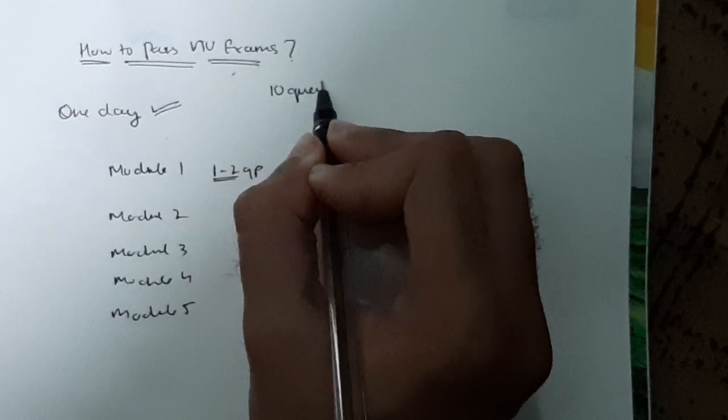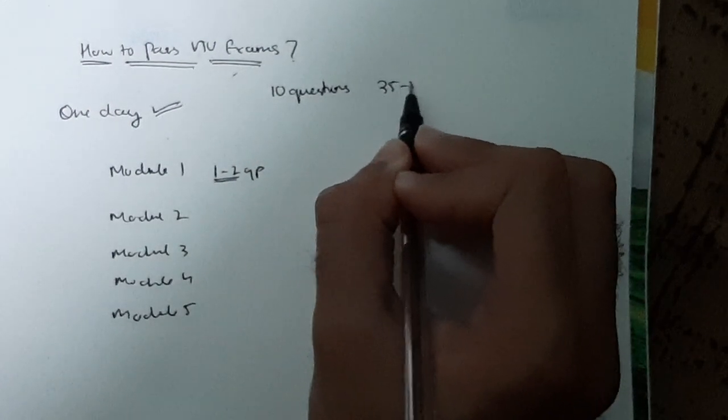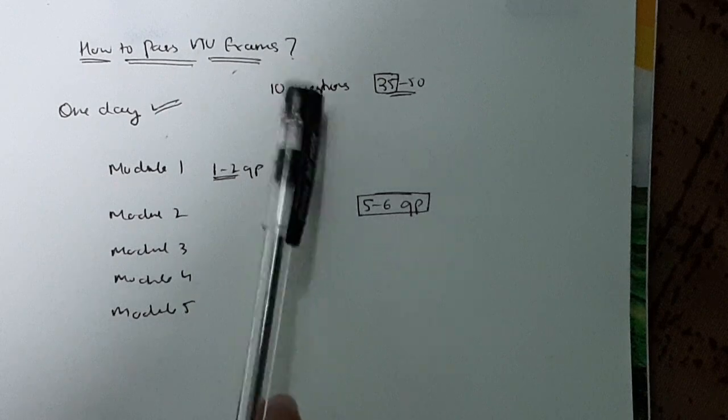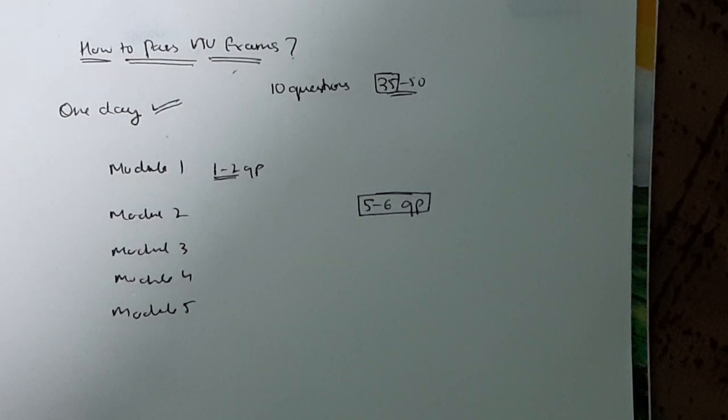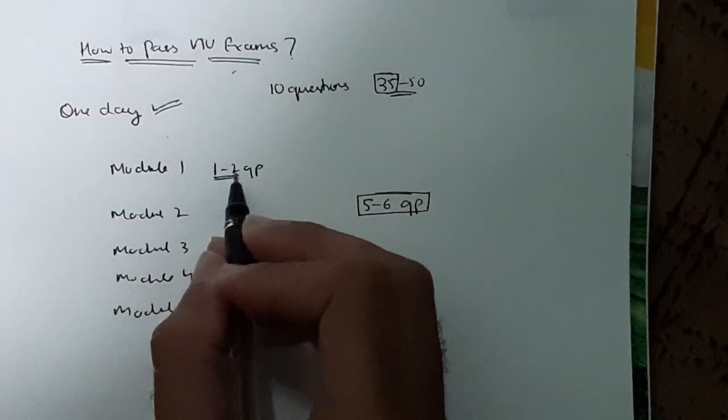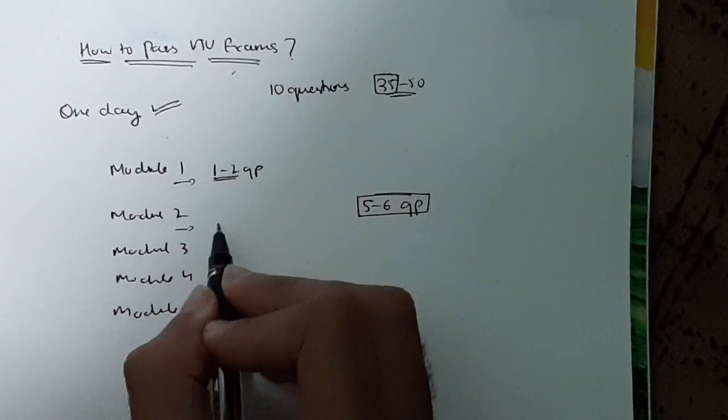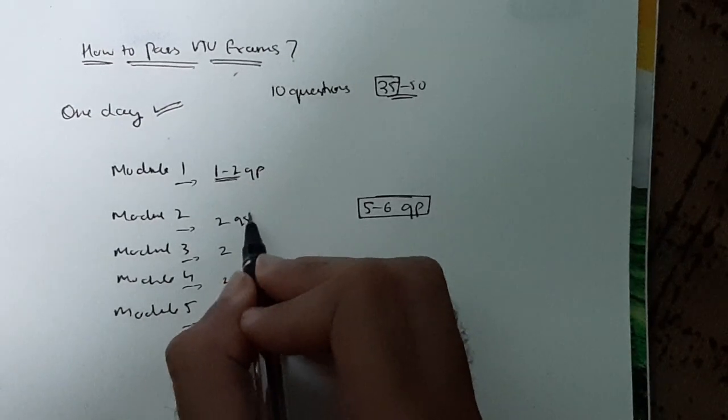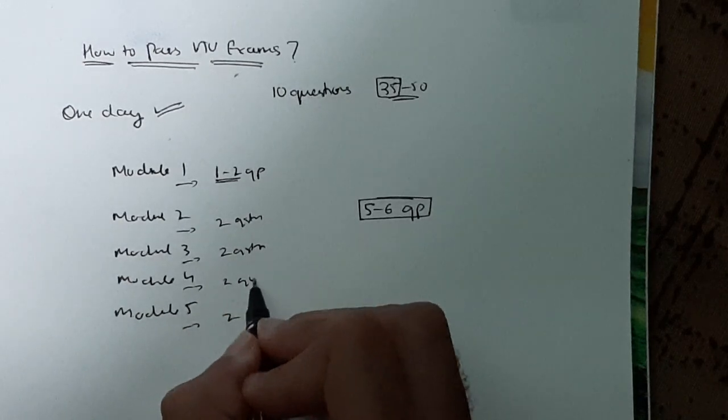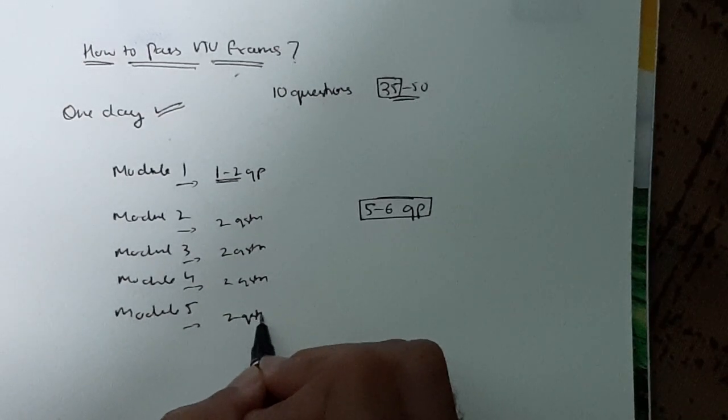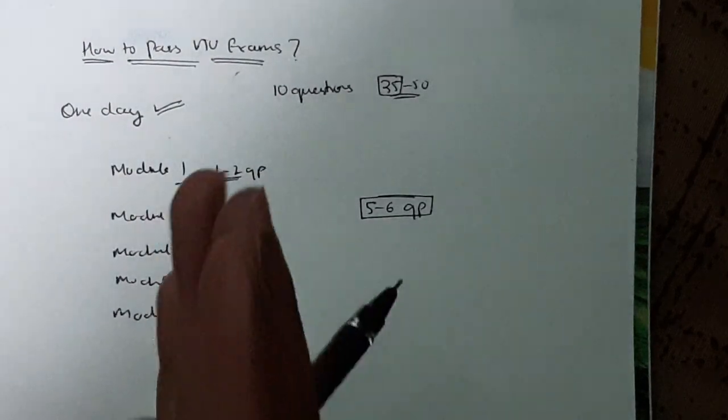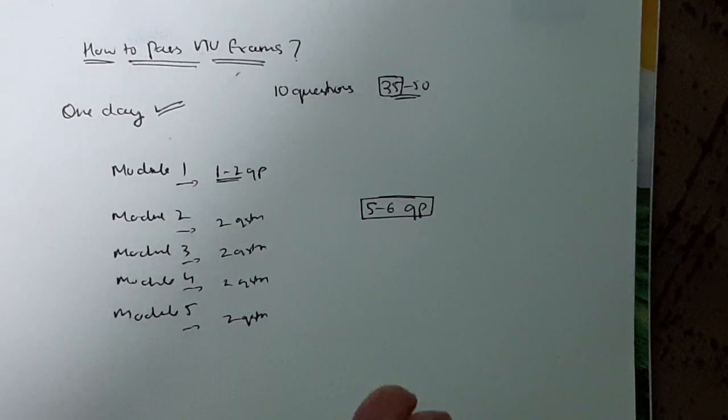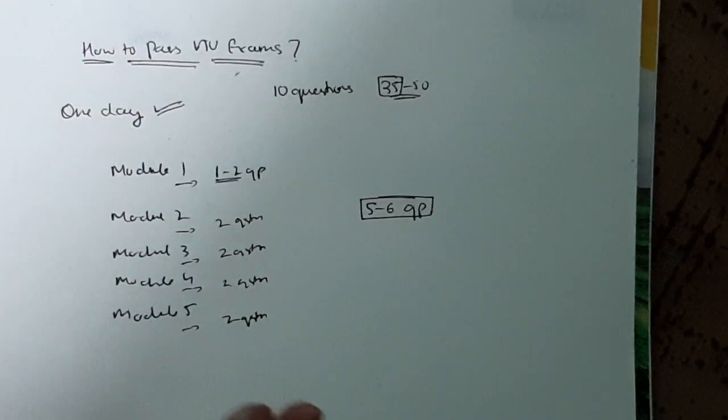I'll tell you to just memorize 10 questions, and you can easily score 35 to 50 marks or even more. Minimum 35 you will definitely get if you memorize these 10 questions. Take one or two questions from Module 1, same for Module 2, Module 3, Module 4, and Module 5 - the most repeated ones. Sometimes you'll get three or four questions repeated. Ten questions is very less compared to the whole subject, so even if it goes to 15 questions, it's not a matter of concern.